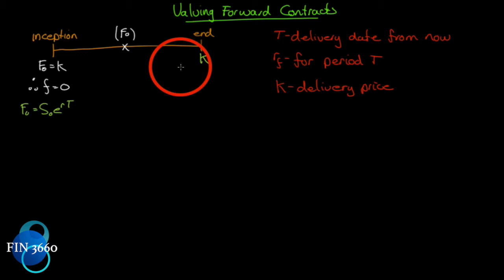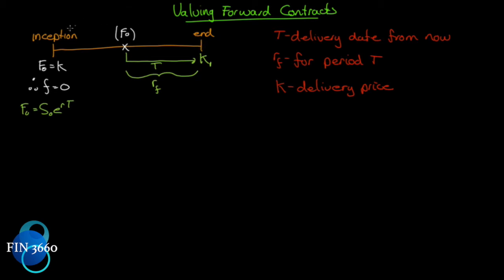Along comes party two at a later point in time, with time T remaining. They observe a risk-free rate for that period and want to own that same asset at the same future date. So they calculate F₀ at that point in time using the current spot price, the current risk-free rate, and the remaining time T. Notice that the spot price, the risk-free rate, and T are all different from party one's inputs, giving a different price K2.